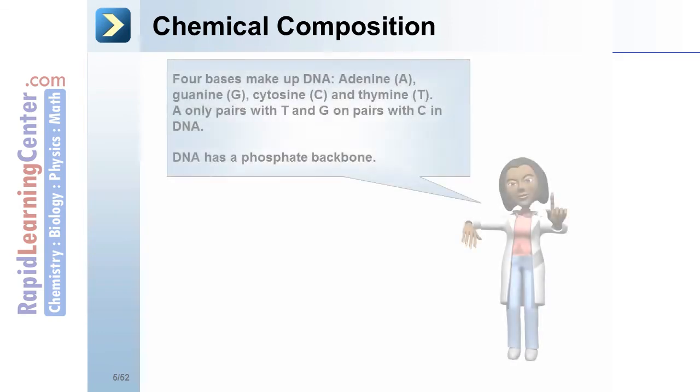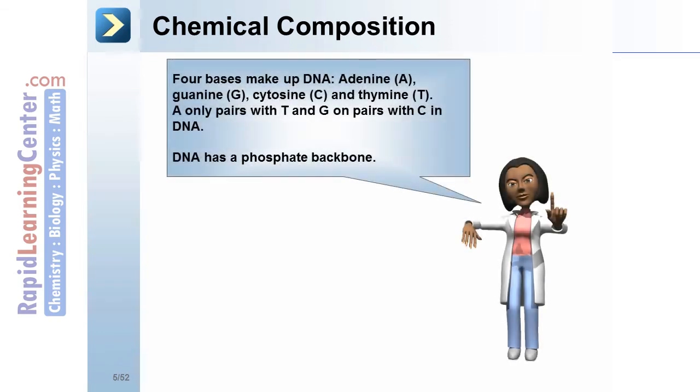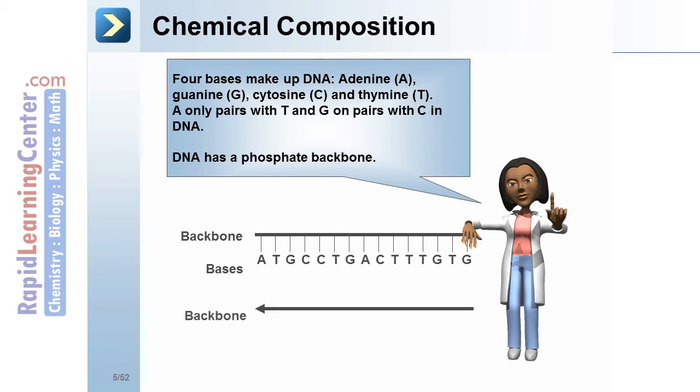Chemical composition. Four bases make up DNA: adenine, guanine, cytosine, and thymine. A only pairs with T and G only pairs with C in DNA. DNA has a phosphate backbone. This is the backbone of DNA. It's the phosphates that we've just looked at. The bases are internal.